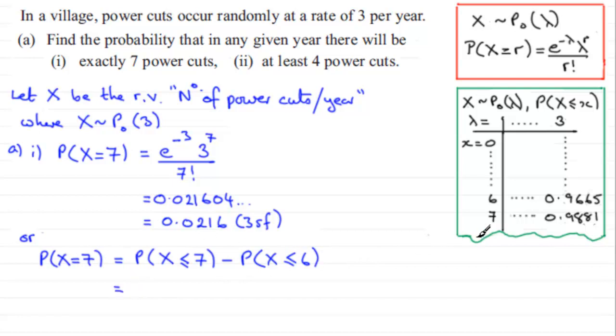And from our tables, if you look under 7, under the mean of 3, you should find that you get 0.9881. And from this, you subtract the probability of X being less than or equal to 6, which is 0.9665. And if you do that subtraction, what you get is 0.0216. So that agrees nicely with the version up here.